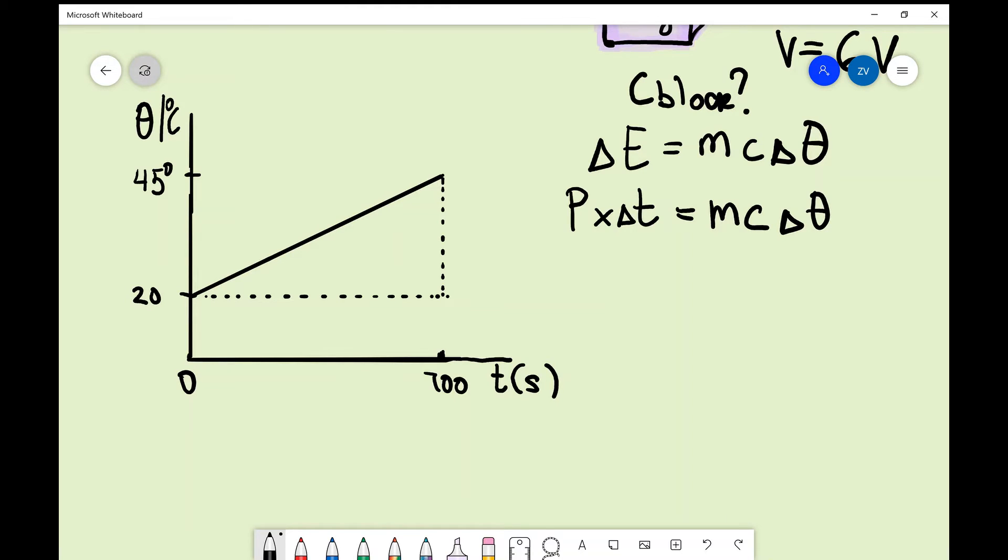Remember power from GCSE electrical power is just voltage times current. So I can just say that this is equal to V times I times delta t. Times delta t is equal to mc delta theta.